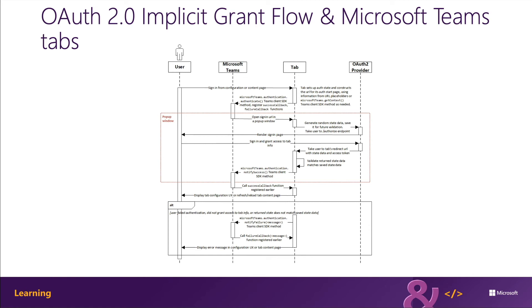That method also registers a success and a failure callback function. Microsoft Teams opens a start page in an iframe in a pop-up window. The start page generates random state data and saves it for future validation. The start page then redirects to the identity provider's authorized endpoint, such as https://login.microsoftonline.com for Azure Active Directory. The start page must be on a domain that is in its valid domains list and on the same domain as the post-sign-in redirect page.